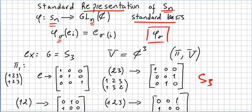This is the matrix. Of course in the standard basis, that's why we have these vectors 1, 0, 0. We are using the standard basis. This is the concept of standard representation of a symmetric n group.